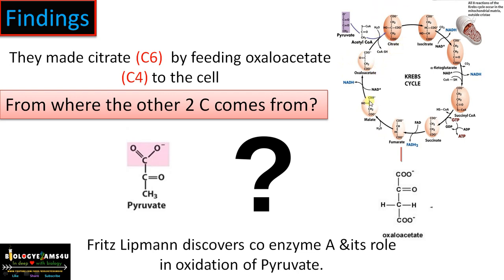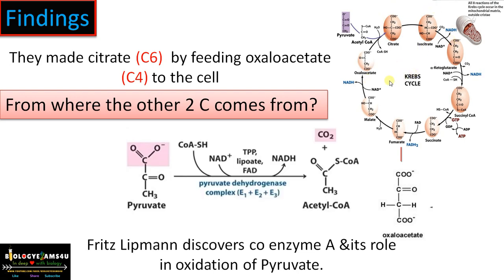Krebs could make alpha-ketoglutarate, succinyl coenzyme A, and succinate — all from oxaloacetate — and he proposed a cyclic pathway that connects glycolysis to the Krebs cycle, then called the citric acid cycle because the first stable compound in the pathway is citrate. We now know that pyruvate is converted to acetyl coenzyme A by the enzyme pyruvate dehydrogenase, a role discovered by Fritz Lipmann.